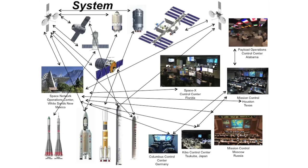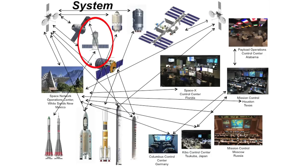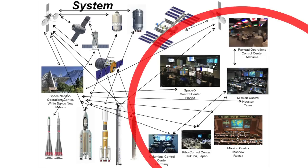Cargo vehicles deliver cargo to the station from all over the world — Japan, Europe, commercial vendors, and Russia. Crew vehicles like the Soyuz capsule deliver crew and return them to Earth. Large communication satellites relay data from the space station down to Earth so people can communicate with the crew on board. Many facilities spread around the world have to be integrated together to make the station operate — sending information up to the station and taking data down to the scientific community. This is a very large system coordinating thousands of people, and this is where system engineering comes into play.